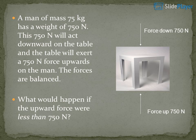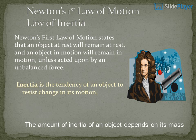A man of mass 75 kilograms has a weight of 750N. This 750N acts downward on the table, and the table exerts a 750N force upward on the man — the forces are balanced. Force down: 750N; force up: 750N. What would happen if the upward force were less than 750N?